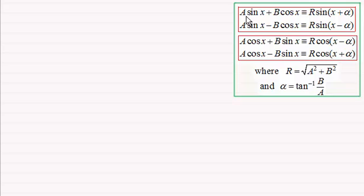In the first identity we've got A sin x plus B cos x is identical to R sine of x plus alpha, where A, B, R and alpha are constants. Let's just assume for the moment that R equals the square root of A squared plus B squared and alpha equals the inverse tan of B over A.